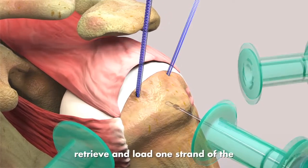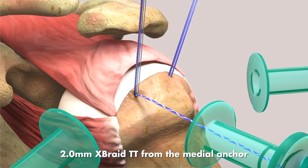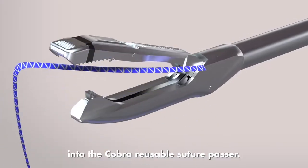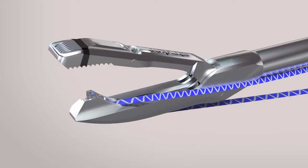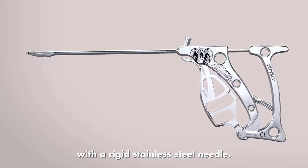Through the lateral portal, retrieve and load one strand of the 2.0mm X-Braid TT from the medial anchor into the COBRA reusable suture passer. COBRA is the first-ever reusable suture passer with a rigid stainless steel needle.